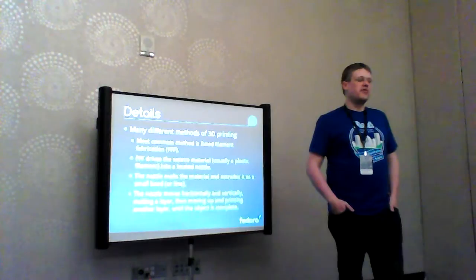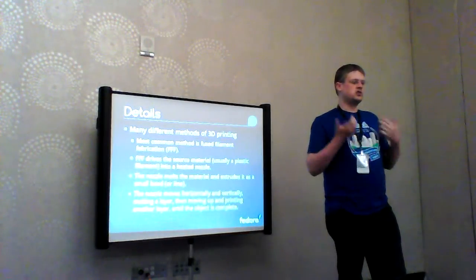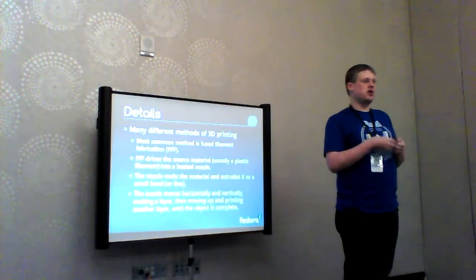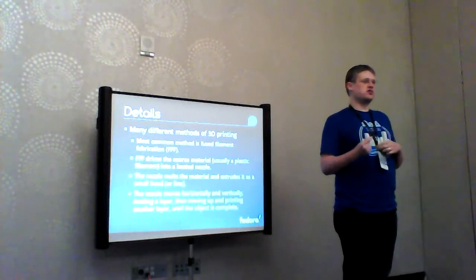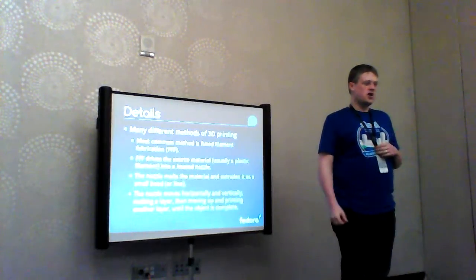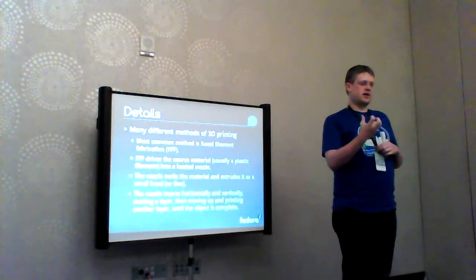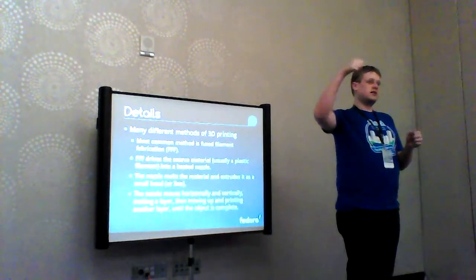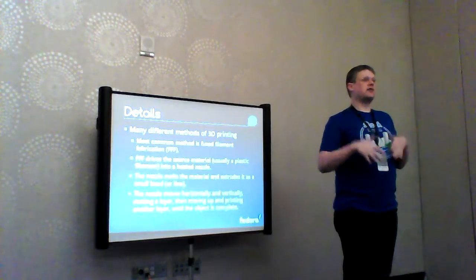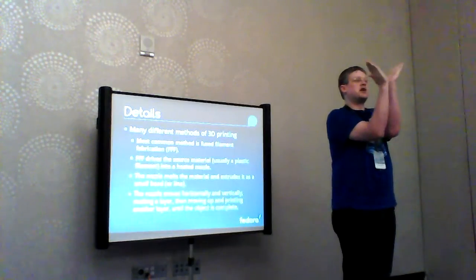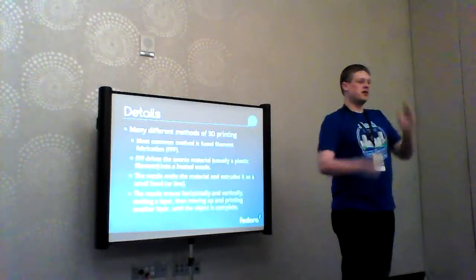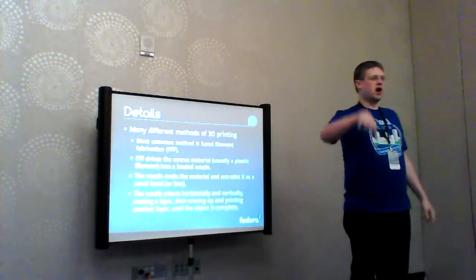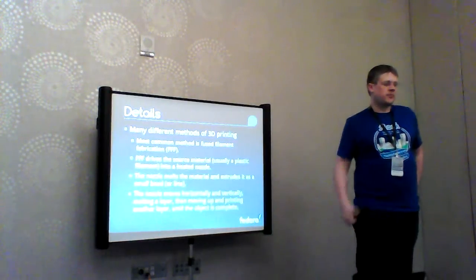FFF works by driving a source material — usually a plastic filament — into a heated nozzle. The nozzle melts the material and extrudes it as a small bead or line. The width of extrusion is controlled by the diameter of the hole in the nozzle. Many designs also have a small reservoir where the nozzle melts the material and holds it in a liquid state to maintain constant flow. The nozzle moves horizontally and vertically, making a layer, then moves up along the Z axis, and prints another layer until the object is complete.